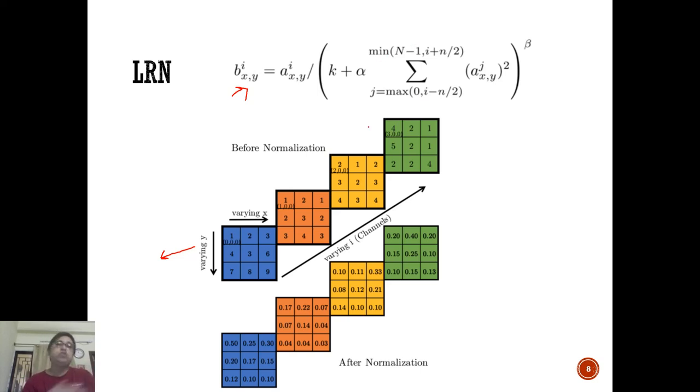Very simply, if you're looking at this particular cell and taking n as three or two, there's no channel before this, so it will consider this value from this channel and this value from this channel. It will take this value, getting one from here and dividing by the square of one. You get one plus one, a value of 0.5. Here you're using k as zero and alpha equal to one, getting 0.5.